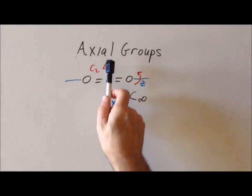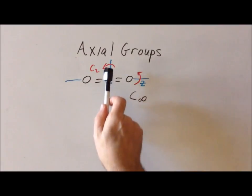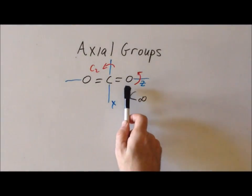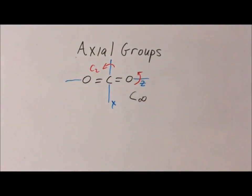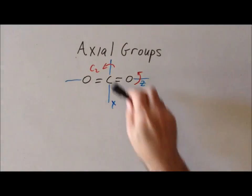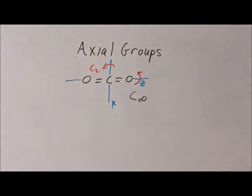And we noticed that if we do this particular C2 operation, that carbon is along the axis so it's not affected. The rightmost oxygen is turned into the leftmost oxygen. The leftmost oxygen swings around to this. So if I were to do a C2 along this particular axis, the molecule will look identical to how it looked before. Therefore, it tells us that this particular C2 is a symmetry operation of the group.